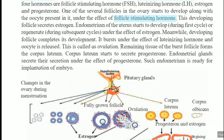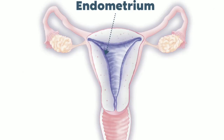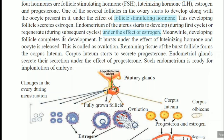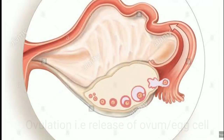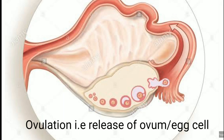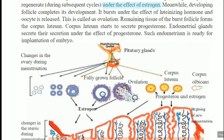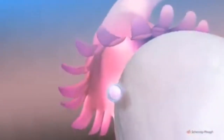At the maturity age, the first time this cycle forms and the endometrium wall — it is a layer — develops. After that, in each month it gets regenerated. Meanwhile, the developing follicle completes its development. It bursts under the effect of luteinizing hormone and the oocyte is released. This is ovulation — the egg cell is released through the follicle under the effect of luteinizing hormone. The follicle ruptures and the ovum comes out.